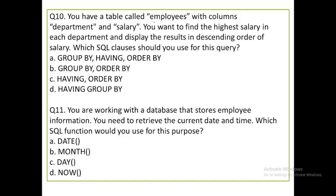Next question: you have a table called EMPLOYEES with columns department and salary. You want to find the highest salary in each department and display the result in descending order. Which SQL clauses should you use? GROUP BY alone is not enough. The correct option is GROUP BY and ORDER BY — GROUP BY for department-wise grouping, and ORDER BY to sort the salary in descending order. HAVING is not needed here as there is no aggregate condition.